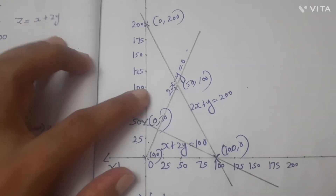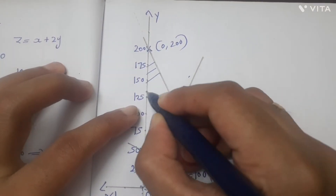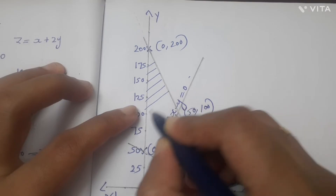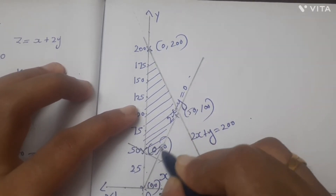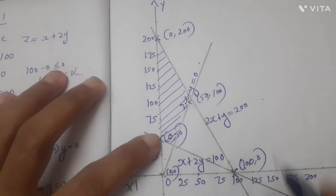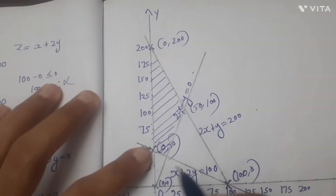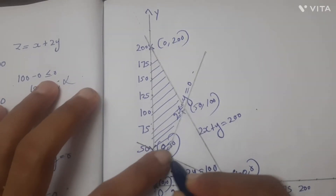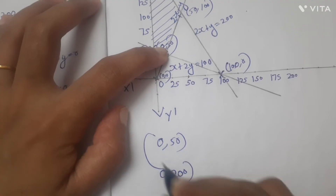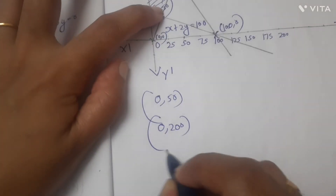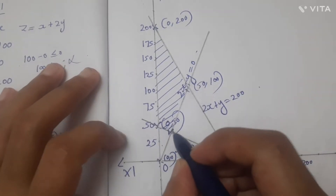Let's check the feasible region and look at the corner points of the feasible solution. One corner point is (0, 50). Another point is (0, 200). One corner point is (50, 100). These are the corner points of the feasible region.